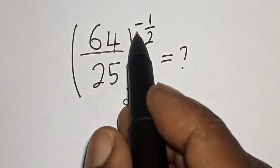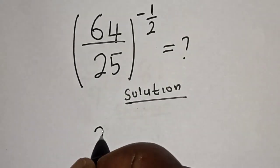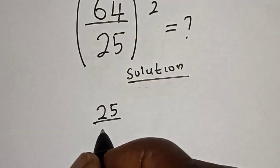In order to remove this negative exponent, we have to transform this. That is, (25/64)^(1/2).